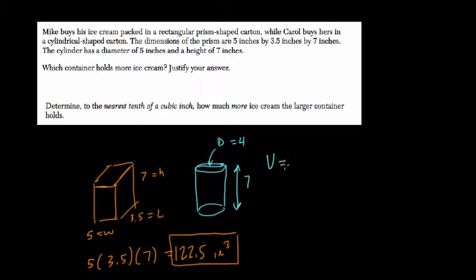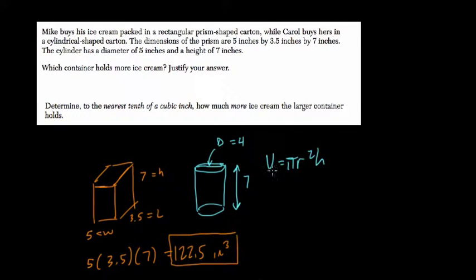However, the volume now is πr²h, because it's the area of a circle, πr², times the height. So if the diameter is 5, it means the radius equals 2.5, and the radius squared equals 6.25.